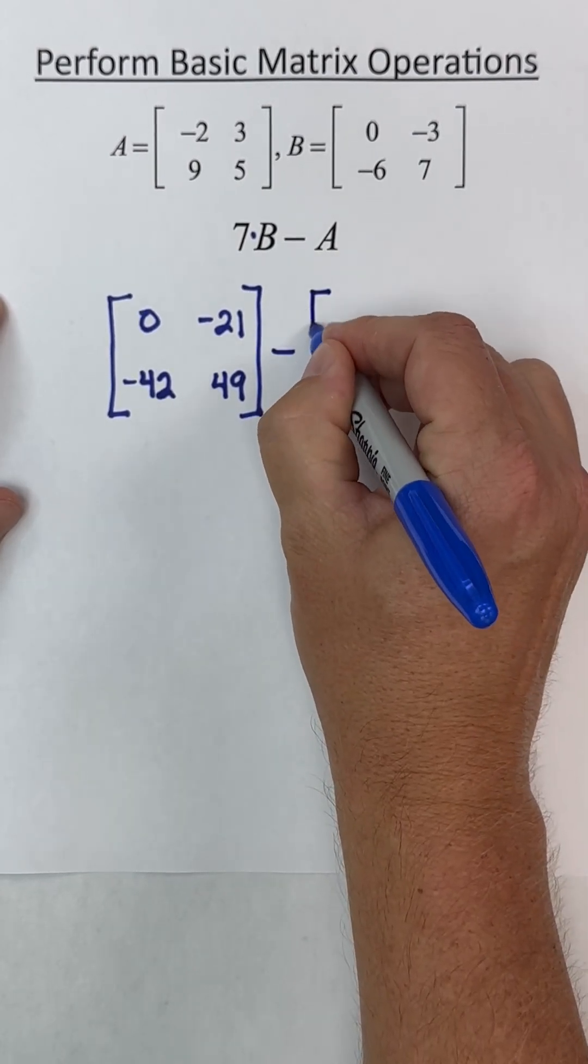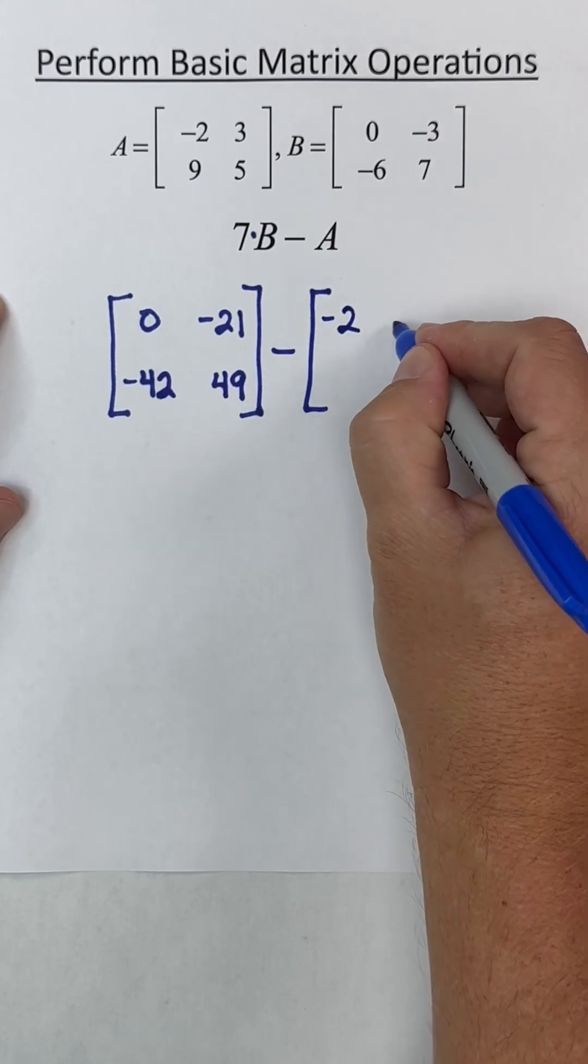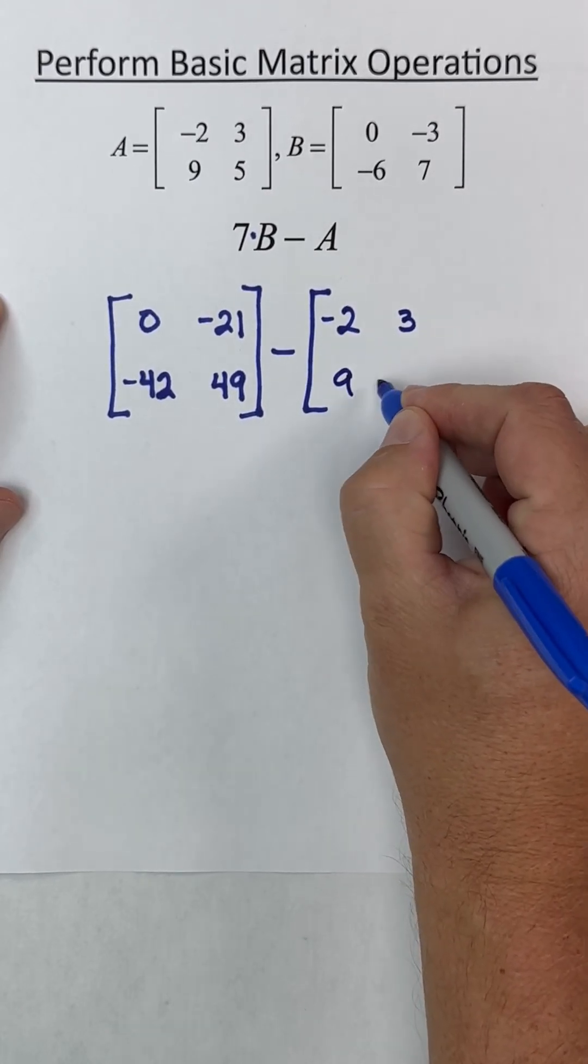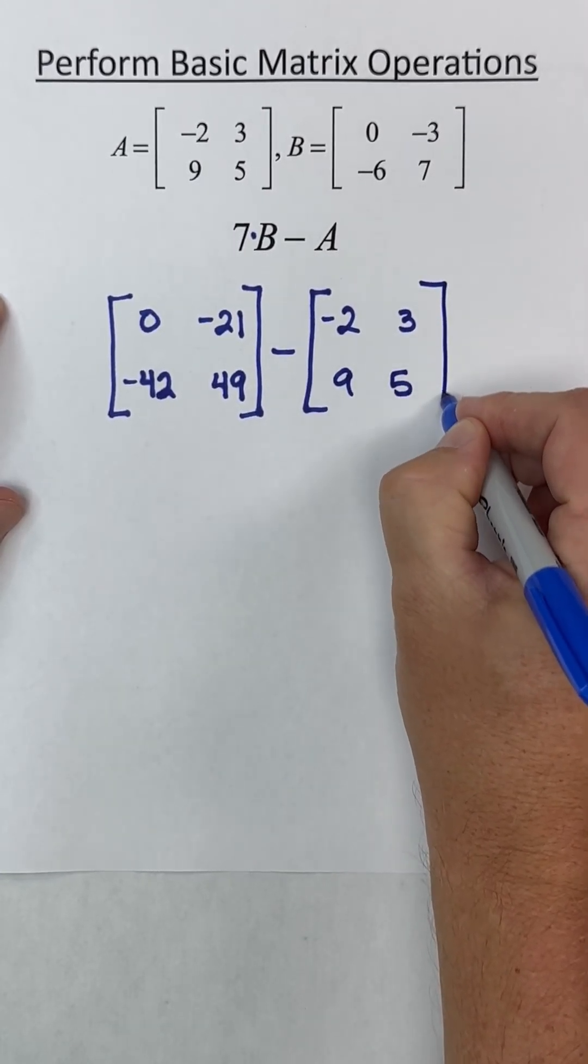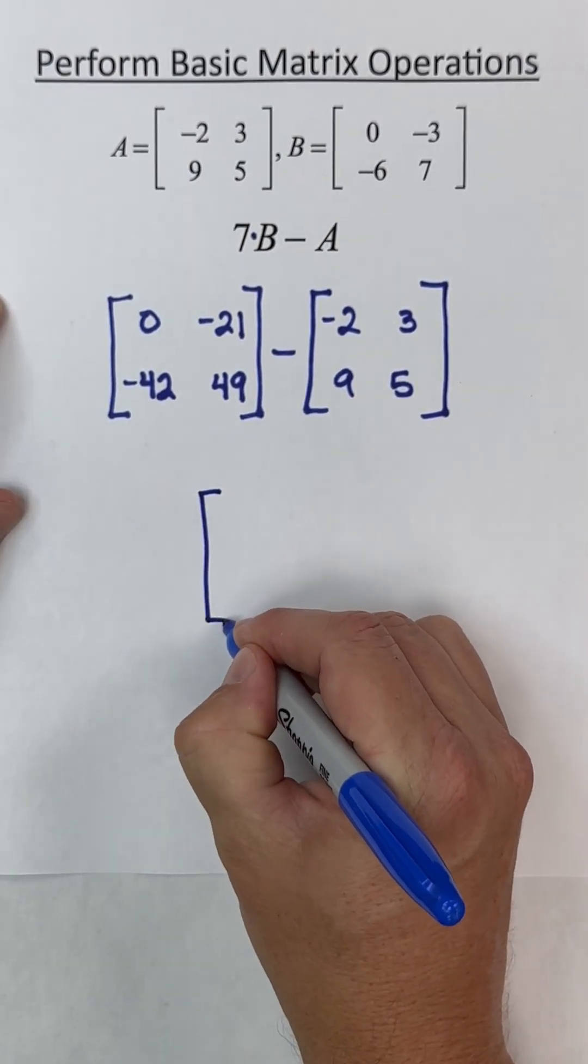And then we're going to subtract from that matrix A. We're not going to change matrix A, so just copy it down. Okay, we already established both matrices were the same size. So we can go ahead and subtract these matrices.